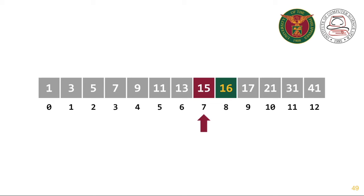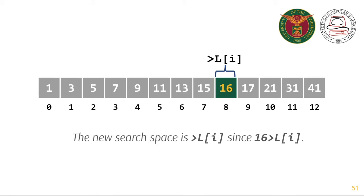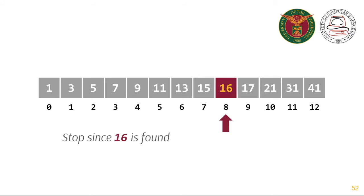The new search space is less than L sub i since 16 is less than L sub i. The next value that we will compare is 15 and 16. Since 15 and 16 are not equal, the new search space is greater than L sub i since 16 is greater than L sub i. And then we stop since 16 is found. The binary search algorithm will return 8 since 16 is found at index 8.